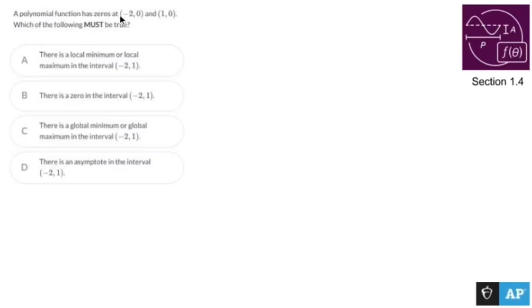A polynomial function has zeros at negative two, zero, and one. Which of the following must be true? I see words like minima and stuff like that, so I kind of know what's going to happen. Let's draw ourselves a coordinate plane.